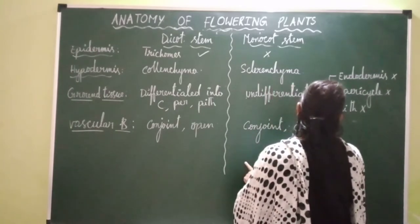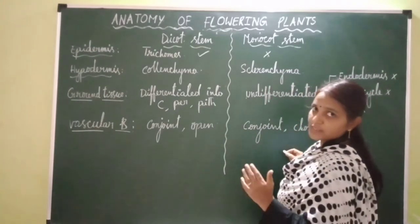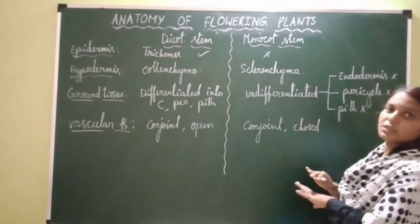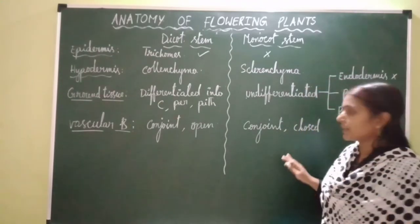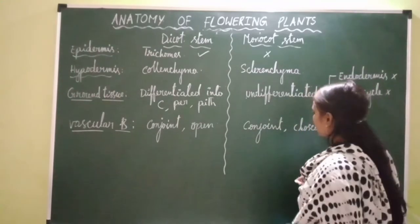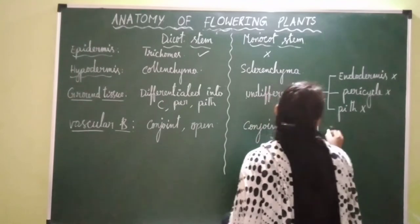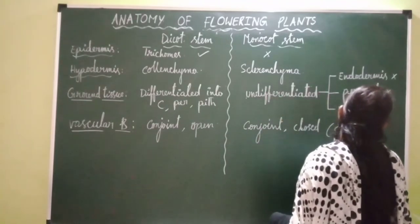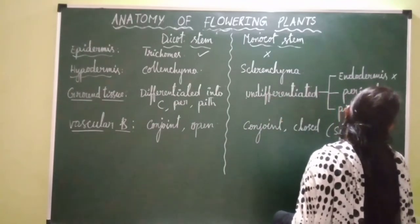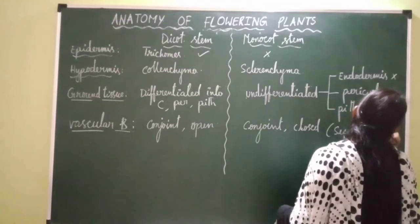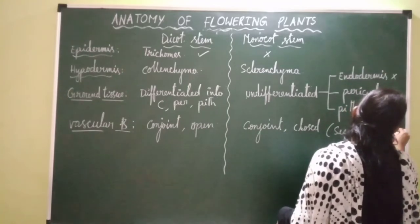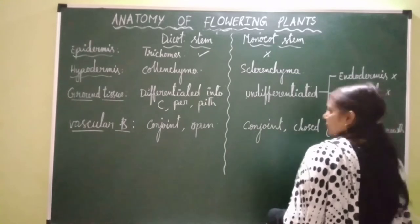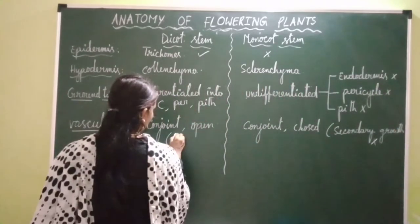The monocot stem vascular bundles are called closed type because there is no cambium between phloem and xylem of a vascular bundle, and hence monocot stem does not exhibit secondary growth. Secondary growth is absent in case of monocot stem, but in case of dicot stem, secondary growth is present.